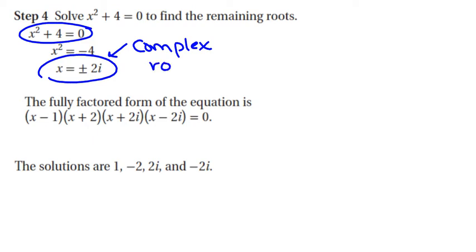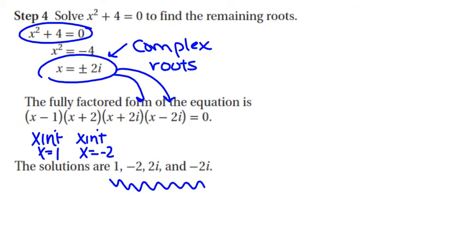Complex roots will not be x-intercepts. Imaginary roots do not become x-intercepts. So we did have an x-intercept at x equals one. We had another x-intercept on the graph at x equals negative two. And then these were my imaginary roots in factored form. So not all roots will be x-intercepts. So the solution is these four roots. We have two imaginary and two real roots.